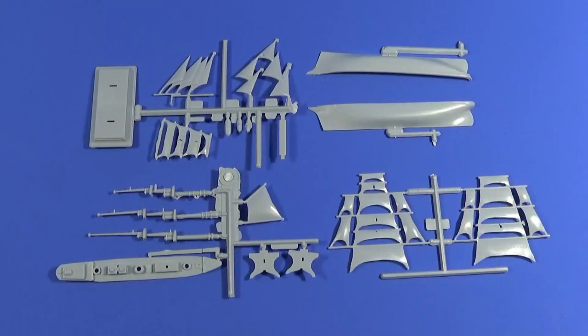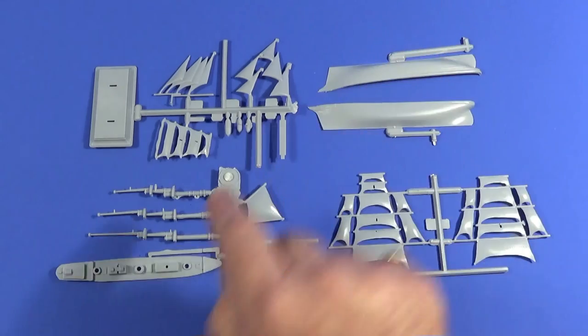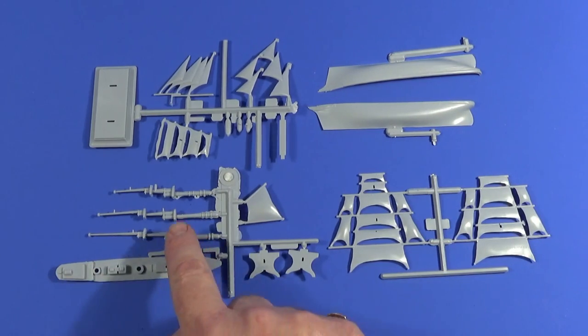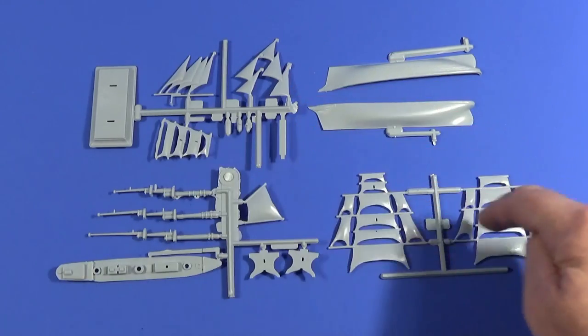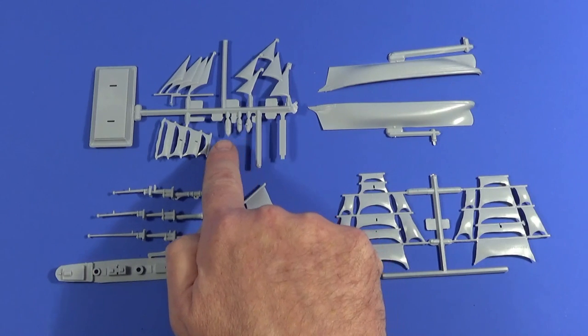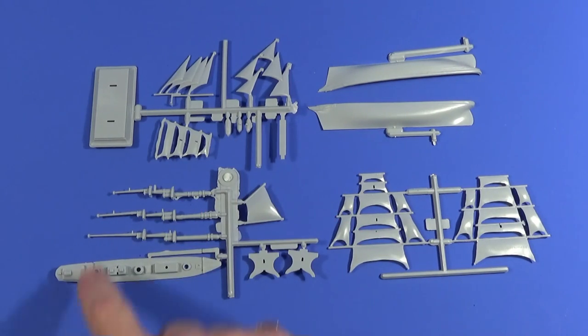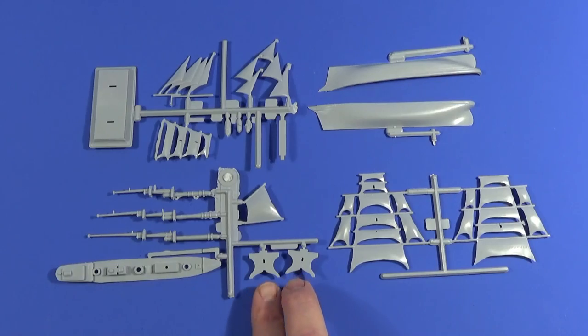So here we have all the parts laid out. There's the two halves of the hull, there's the main deck, three masts, some sails, some boats and the display stand and the two things that hold the hull together are there.